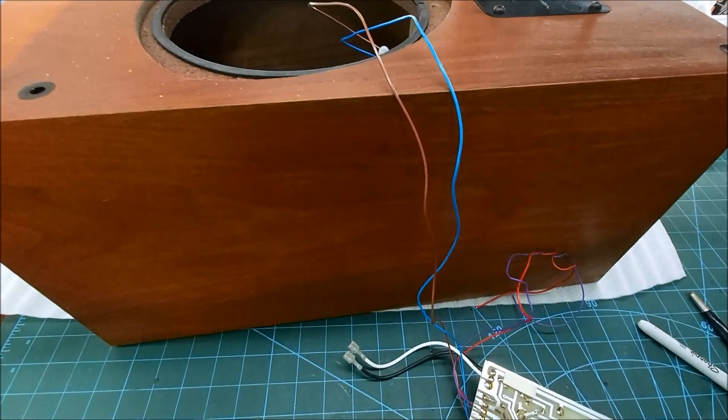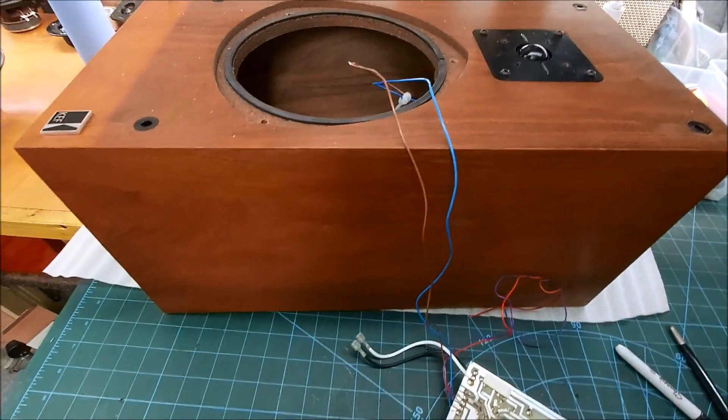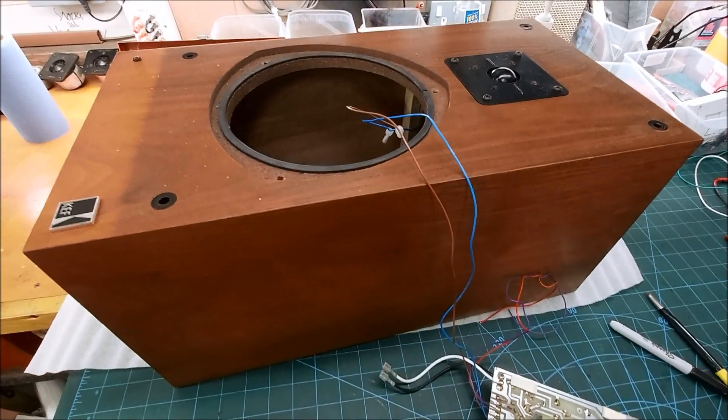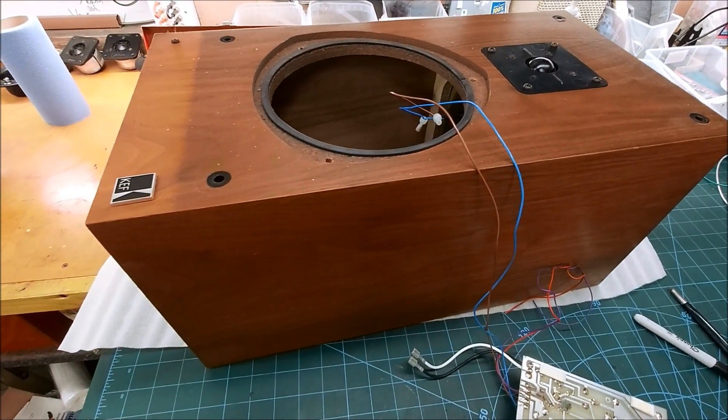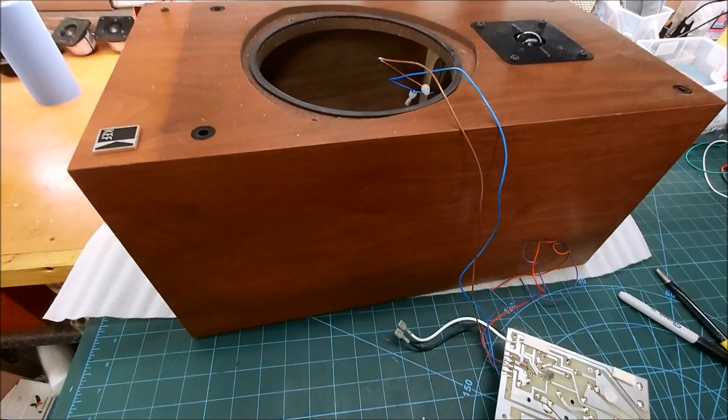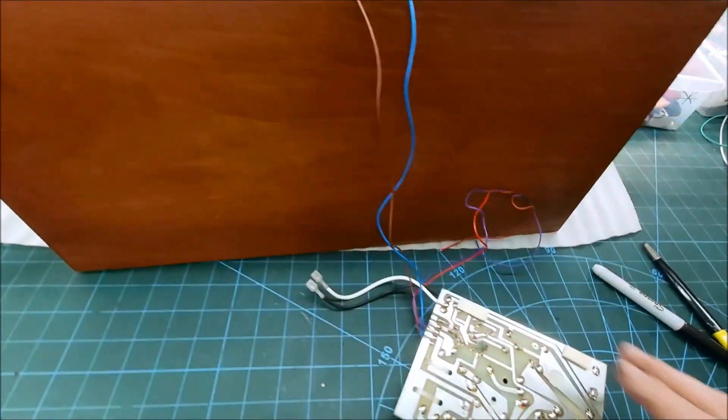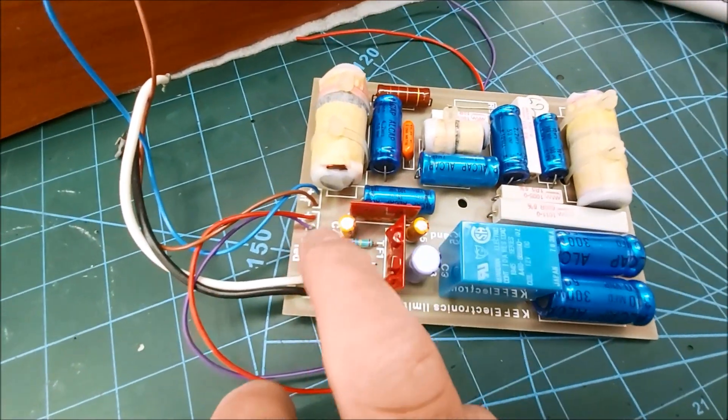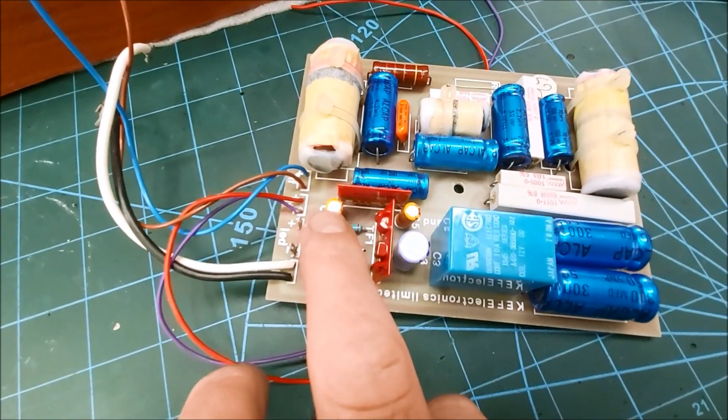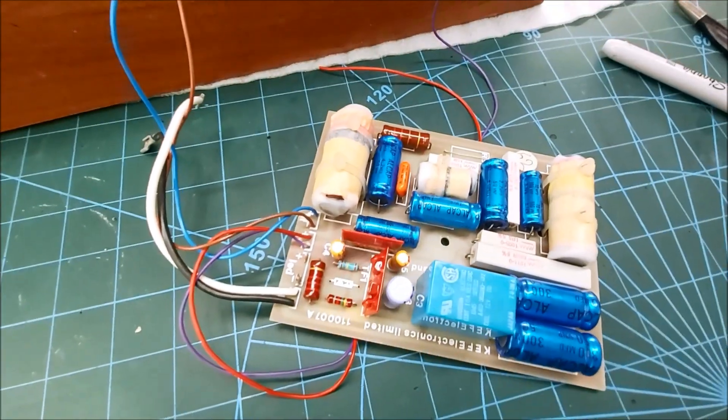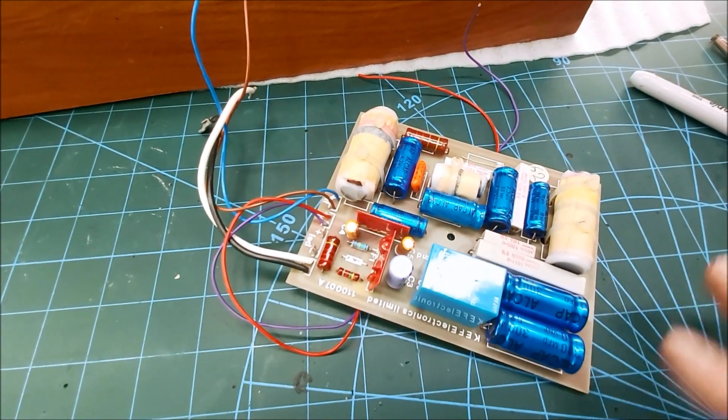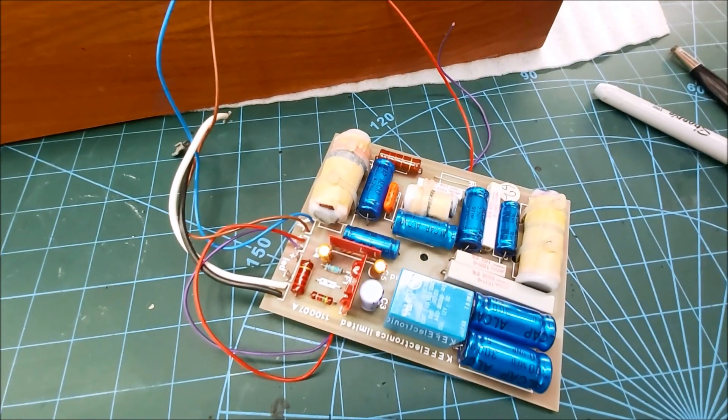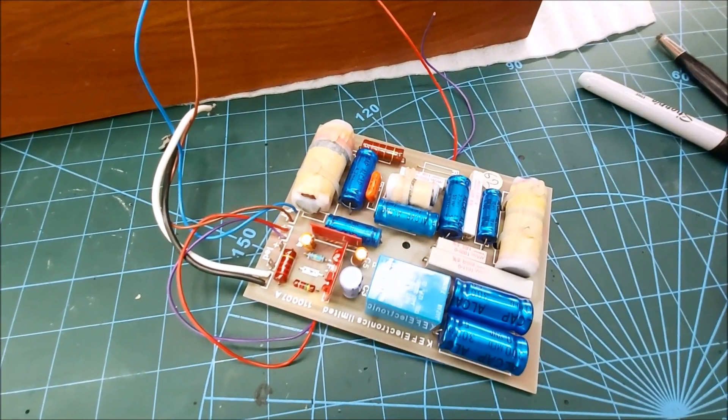I had a guy from America send me three crossovers from a set of KEF reference 101 speakers, and they needed recapping. On the protection circuit there are a couple of capacitors, C5 and C4, both 100 microfarad. On his they had leaked, all of them had leaked and completely eaten through the circuit board behind. I'm going to put a picture up of those now.